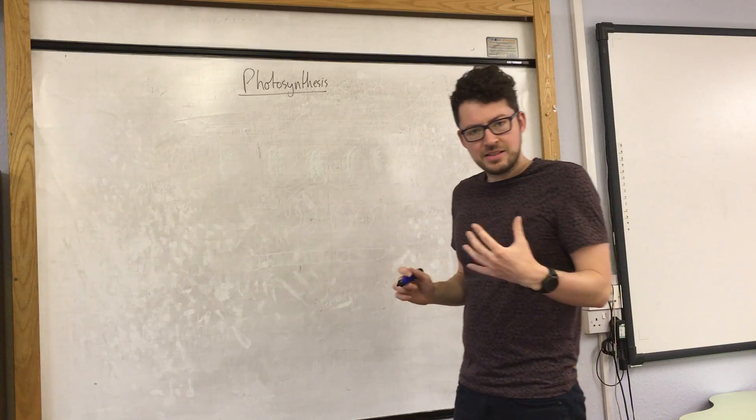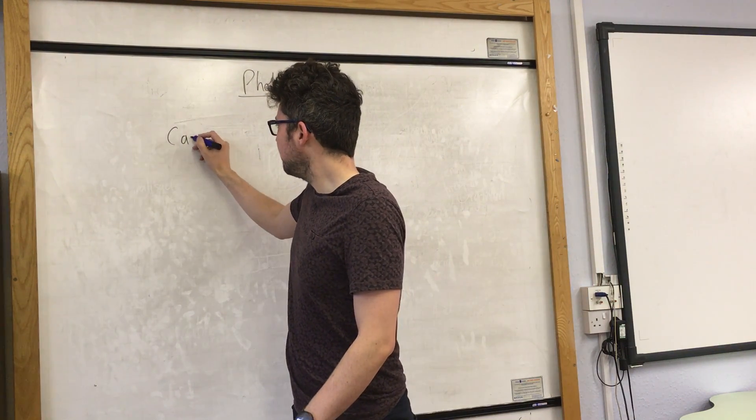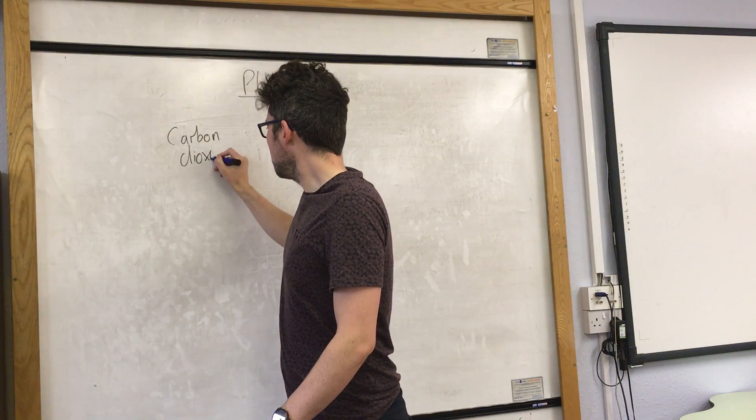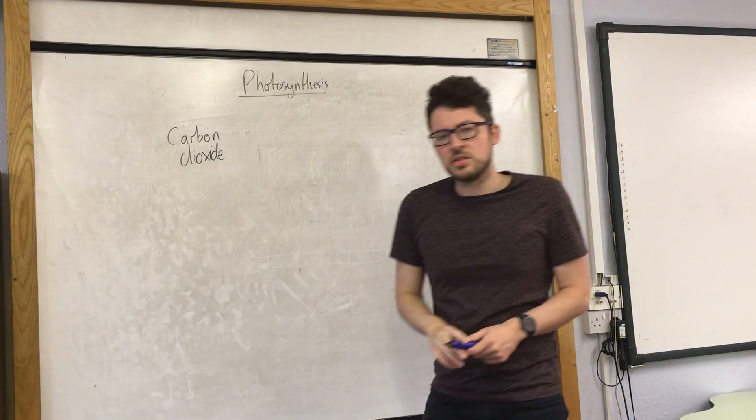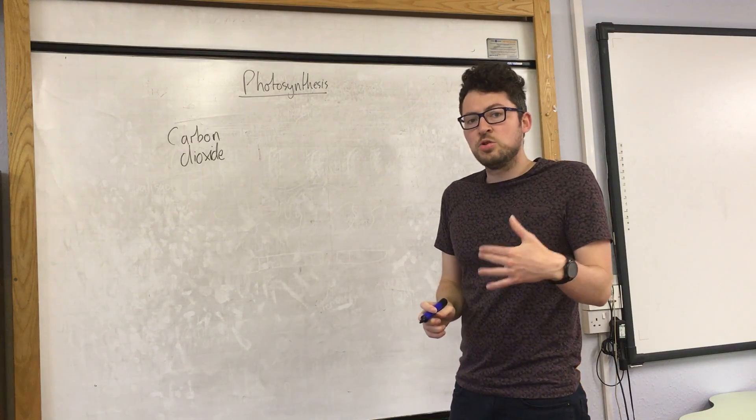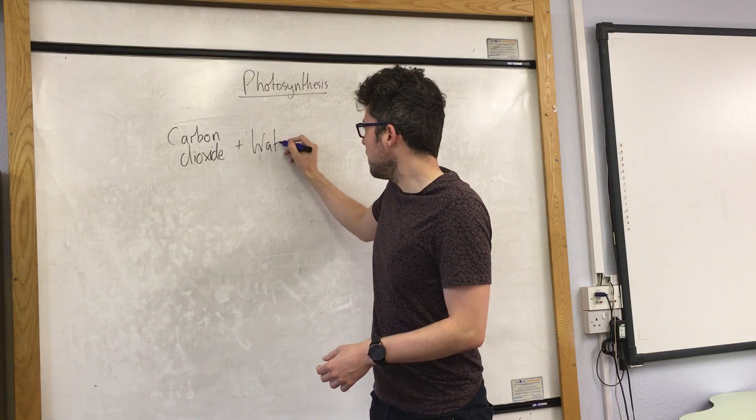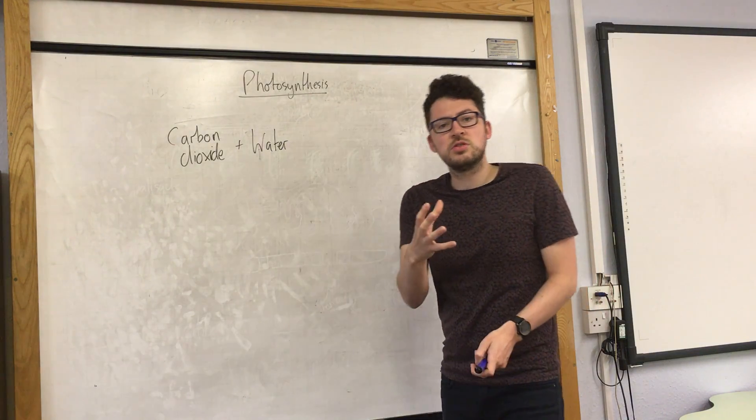The reactants for photosynthesis are carbon dioxide, which they get from the air and absorb through their leaves by diffusion, and water, which they take from their roots from the soil.